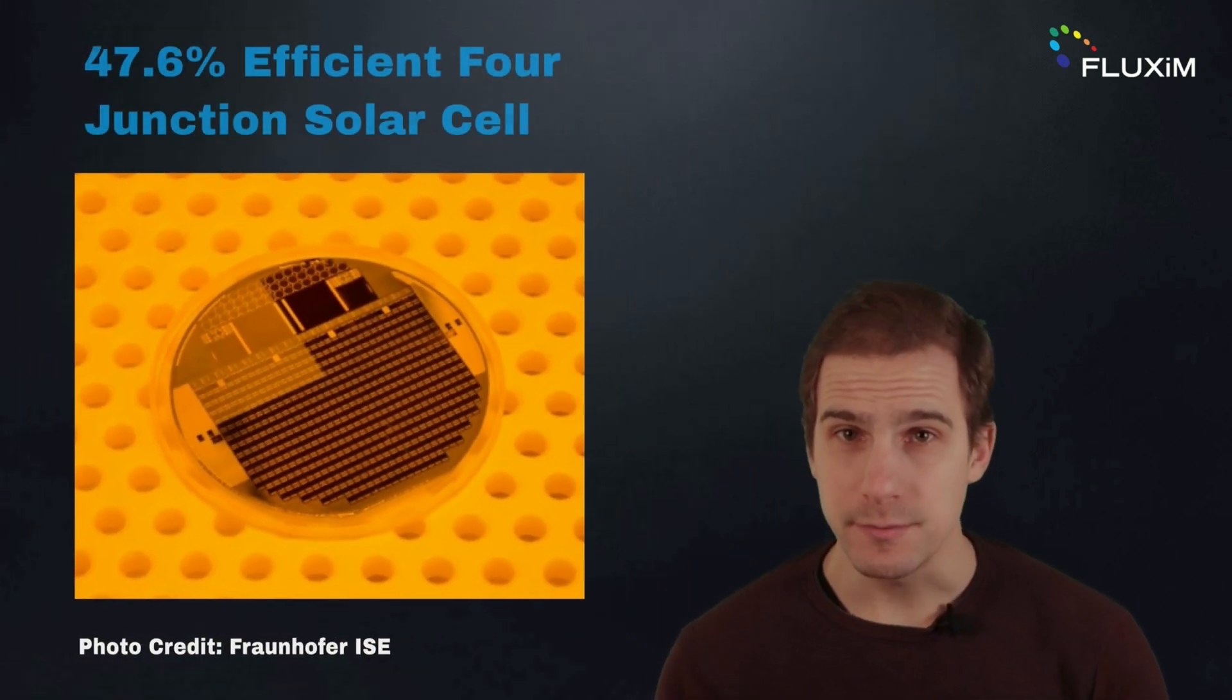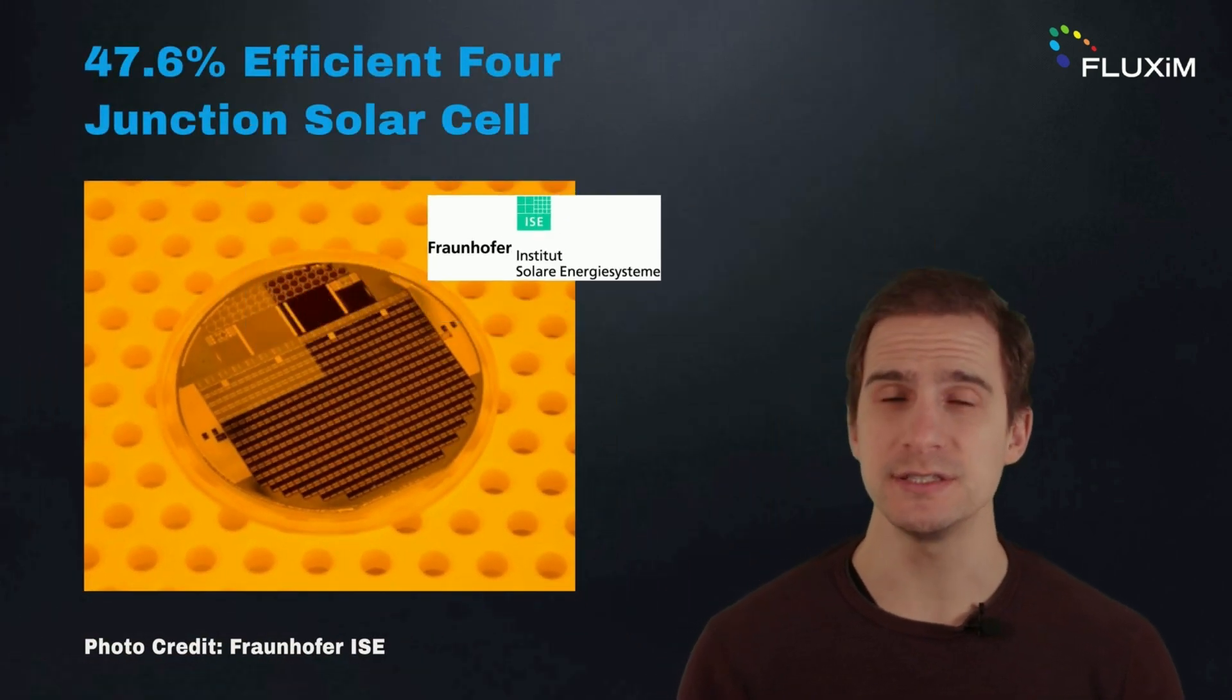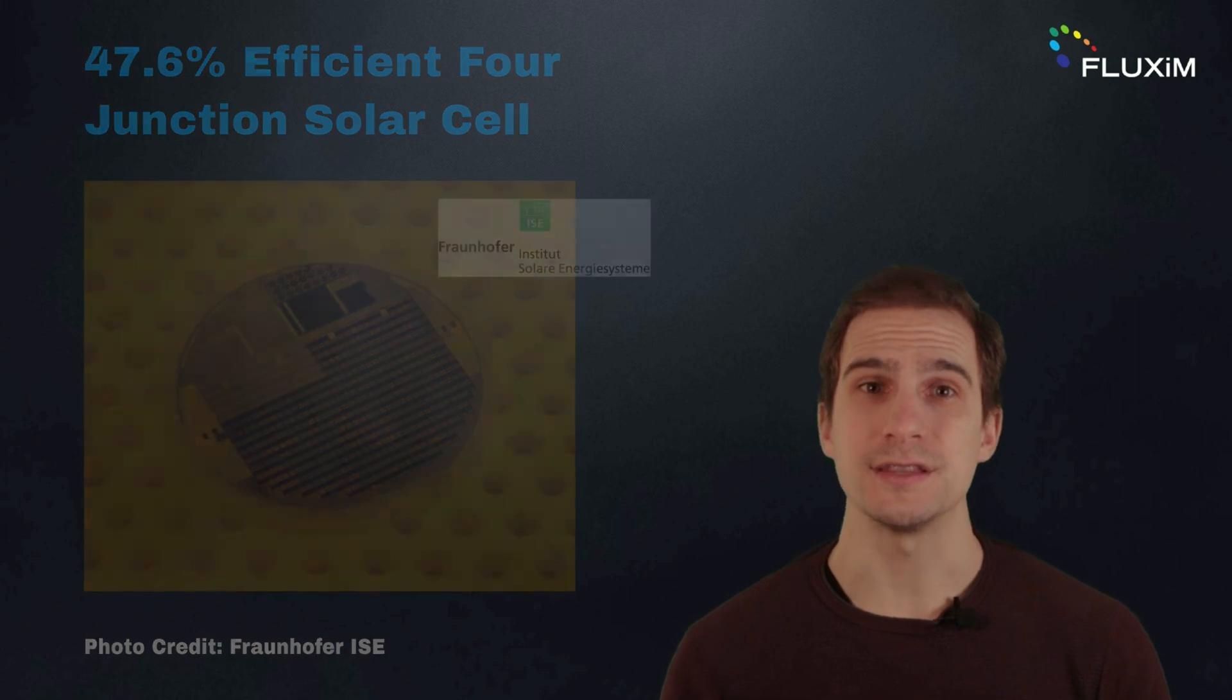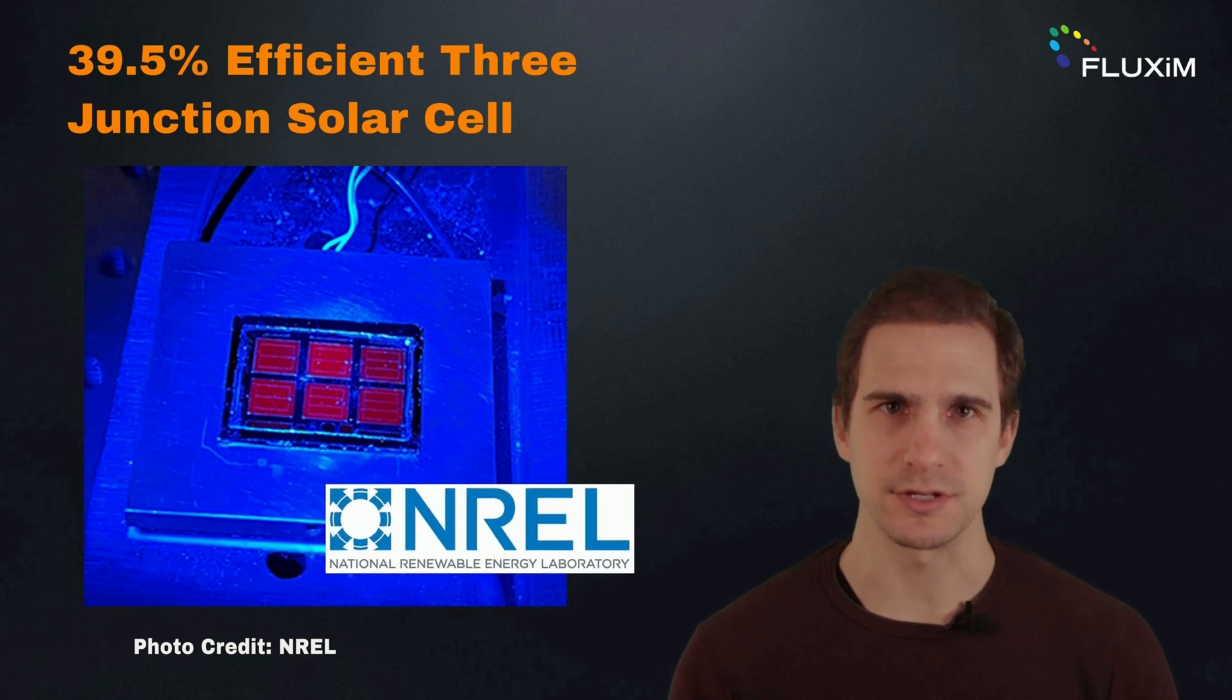Solar cells with infinite multi-junctions have a theoretical efficiency of up to 86.8%. Currently, the most efficient solar cell in the world has an efficiency of 47.6% under concentrated illumination and it is made up of four junctions. The record efficiency under the standard global spectrum instead amounts to 39.5% for a triple junction solar cell.